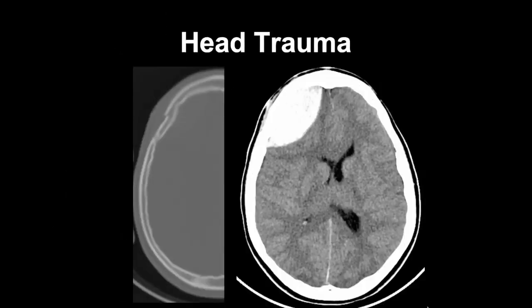We're going to start with the most common intracranial hemorrhages and work our way through to the less common ones. Since we're starting with the most common, we start with head trauma - that's the number one cause of intracranial hemorrhage - and we'll see that there can be different types of intracranial hemorrhage in the setting of head trauma.